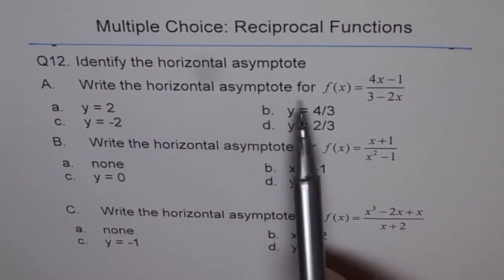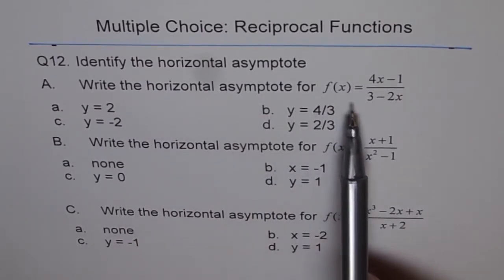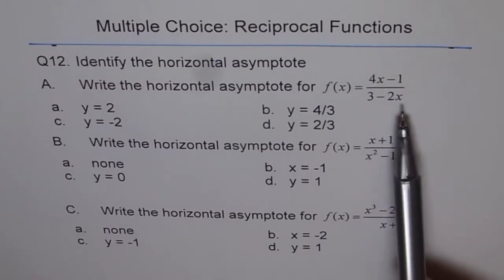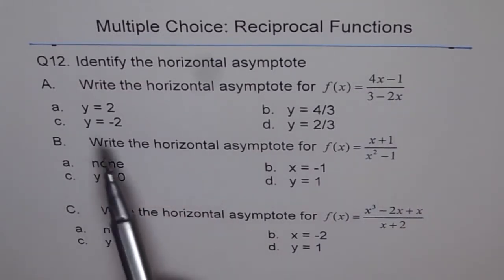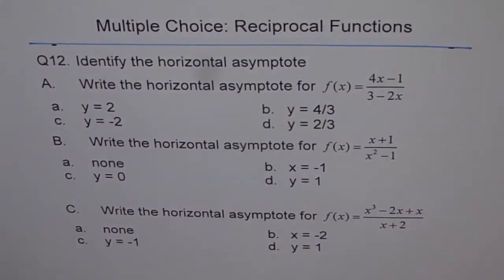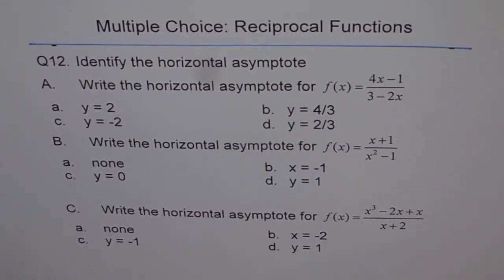Part A: write the horizontal asymptote for f of x equals 4x minus 1 divided by 3 minus 2x. We have four different choices. My suggestion here is that don't look at the choices, write your answer first.